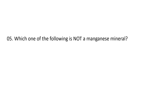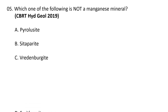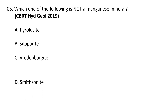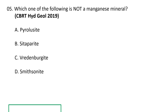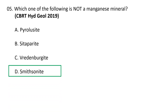Next question. Which one of the following is not a manganese mineral? A. Pyrolusite, B. Cetaparine, C. Rendenbergite, D. Smithsonite. The correct answer is D — Smithsonite. Smithsonite is a zinc mineral, whereas all the others belong to manganese minerals.